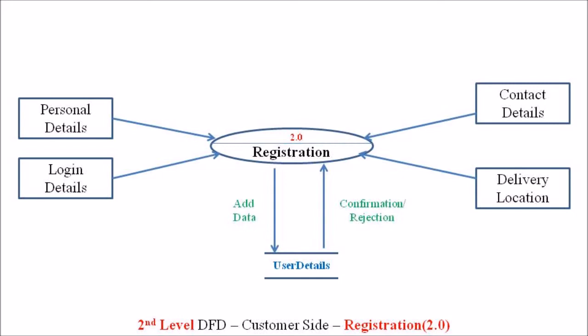Confirmation messages are given back to the customers upon registration. The registration process is associated with four independent entities: personal detail, login detail, contact detail, and delivery location. It is also associated with the user detail data store. This is the level 2 DFD of the customer site registration process.